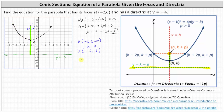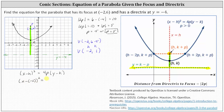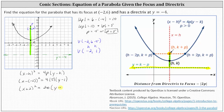Now let's go ahead and find the equation of the parabola. The equation is in the form of the square of x minus h equals four p times the quantity y minus k. Substituting in the known values, we have the square of x minus negative two equals four times p, where p is positive five, times the quantity y minus k, where k is one. Simplifying, we have the square of x plus two equals twenty times the quantity y minus one. I hope you found this helpful.